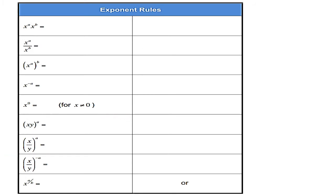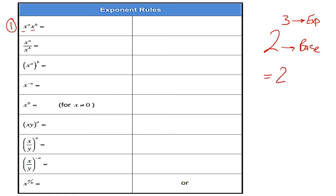Exponent rules, some of us call them power rules. We need to understand how we can simplify and deal with numbers with powers. First rule: when we multiply two numbers with the same base — for example X to the power of a multiplied by X to the power of b — the base here is the same. For example, 2 to the power of 3 means the base is 2, the exponent is 3, and it equals 2 multiplied by 2 multiplied by 2, which is 8.